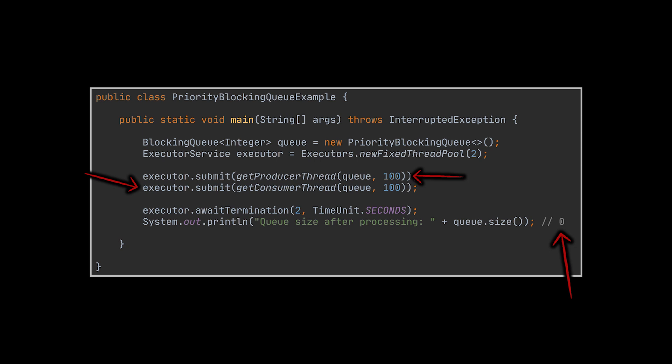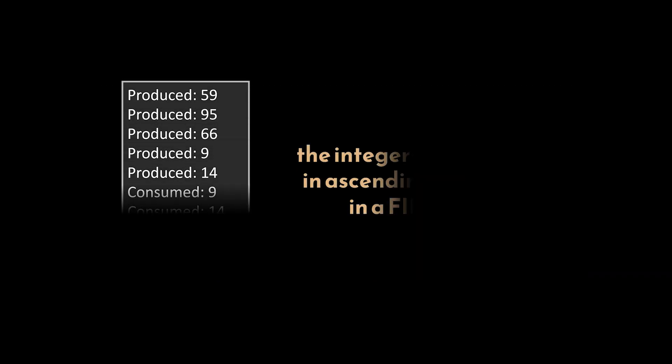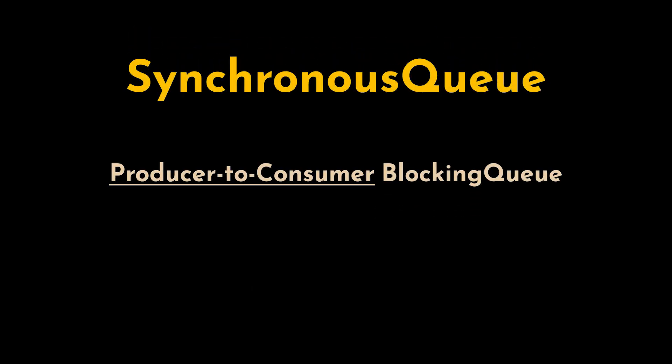Here we are both producing and consuming 100 elements, meaning that when we stop waiting for the threads to execute, the queue will be empty. If we check the output, we can see that the integers were consumed in ascending order and not in the order of their insertion to the queue.